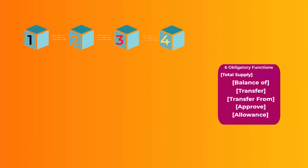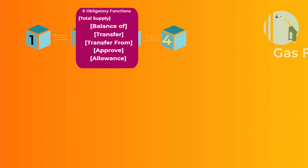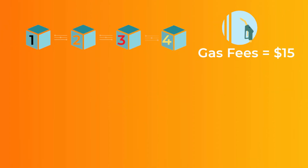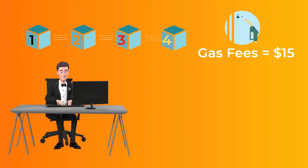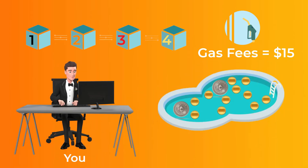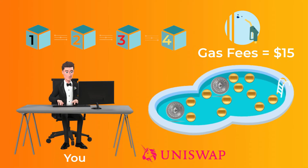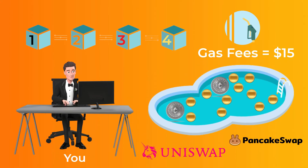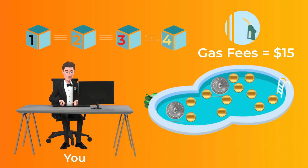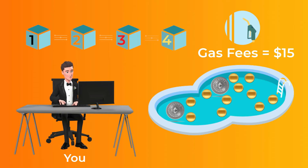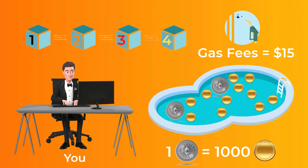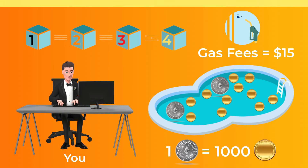After the smart contract is written, you need to deploy it and pay the gas fees. After that, you can create a liquidity pool on Uniswap or PancakeSwap, deposit some money to provide liquidity and set the prices, and then people can start buying your token right away.